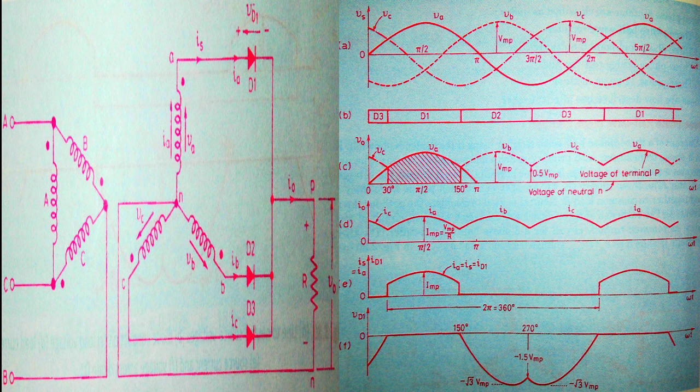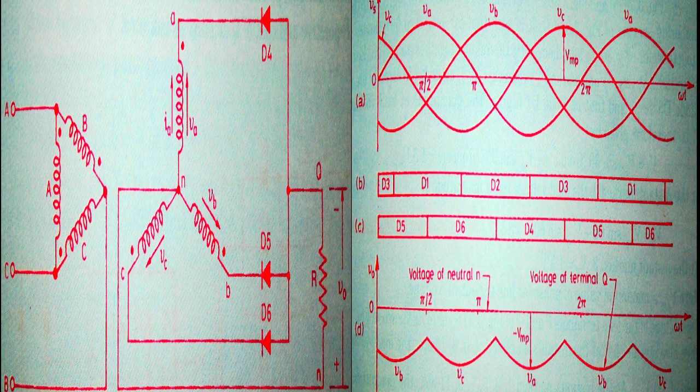As seen in graph part B, from ωt = 30° to 150° diode D1 conducts, then D2 conducts, then D3 conducts. The resultant waveform is shown in part D — both voltage and current are fluctuating. The output voltage fluctuates between the maximum VMP and 0.5 VMP. This is the common cathode arrangement, where the three cathodes are connected together.